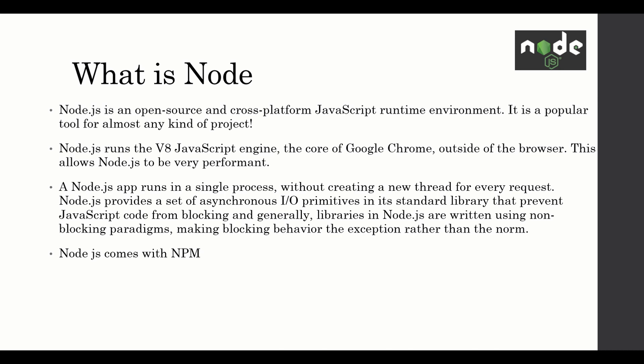Node.js runs the V8 JavaScript engine — the core of Google Chrome — outside of the browser. This allows Node.js to be very performant. You can think of Node.js as a kind of wrapper; it's a runtime environment for JavaScript and a wrapper for the V8 engine, which is an open source project from the Chromium project.